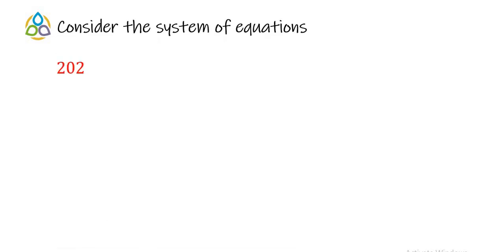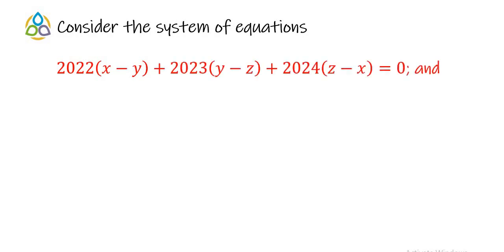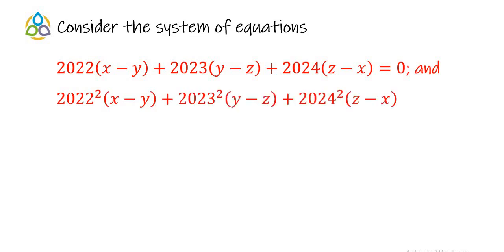Hi friends. Consider the system of equations: 2022(x − y) + 2023(y − z) + 2024(z − x) = 0, and the second equation 2022²(x − y) + 2023²(y − z) + 2024²(z − x) = 2024.